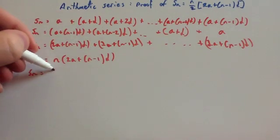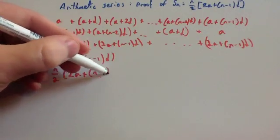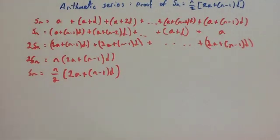So we get Sn equals n over 2 bracket 2a plus n minus 1d. And that's the proof of the sum of Sn.